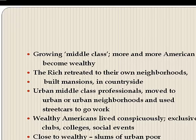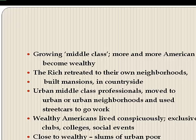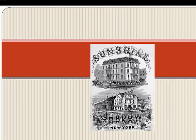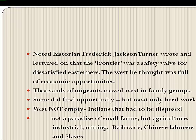Not far from the homes of the wealthy were the urban slums. Much like slums in Mexico City or India, people lived in shacks made of paper or cardboard with no running water and no electricity. Matthew Smith's bestseller Sunset and Shadow depicted the mansion on top and the slums in the shadow. Two decades later, Jacob Riis published photographs called How the Other Half Lives, documenting how the poor lived in New York.